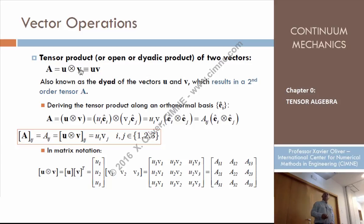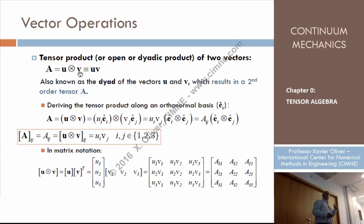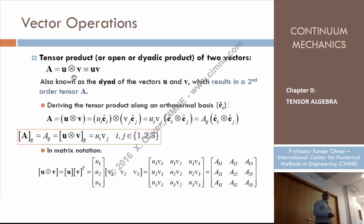The tensor product of two vectors — two first-order tensors — is a second-order tensor. So if two first-order tensors are involved, the result is a higher-order tensor. That's why it's called the open product: because it enlarges the order of the tensor. The original vectors were first-order tensors; the result is a second-order tensor whose component IJ is that operation.